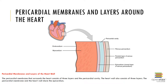The epicardium, also known as the visceral layer of the serous pericardium, covers the outer surface of the heart and consists of an exposed mesothelium and underlying areolar connective tissue attached to the myocardium. The heart is also surrounded by a fibrous pericardium, a tough loose-fitting outer membrane, and a serous pericardium, a double-layered inner membrane with a parietal and visceral layer. Between these layers is the pericardial cavity, which contains pericardial fluid.